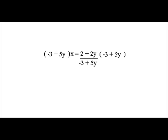Now all we have to do is multiply both sides by the denominator of the rational expression. So we take negative 3 plus 5y and multiply it to either side of the equation. This causes the negative 3 plus 5y in the denominator to cancel out. That gives us negative 3 plus 5y within parentheses times x is equal to 2 plus 2y.